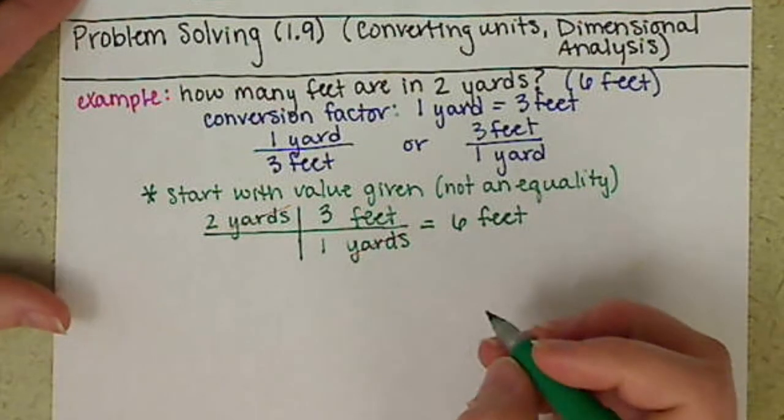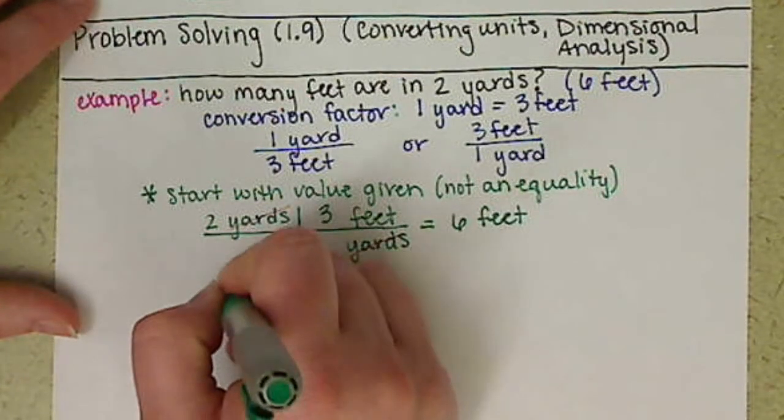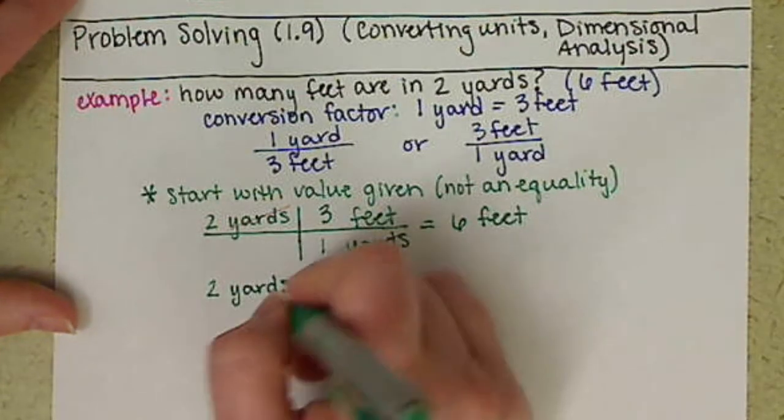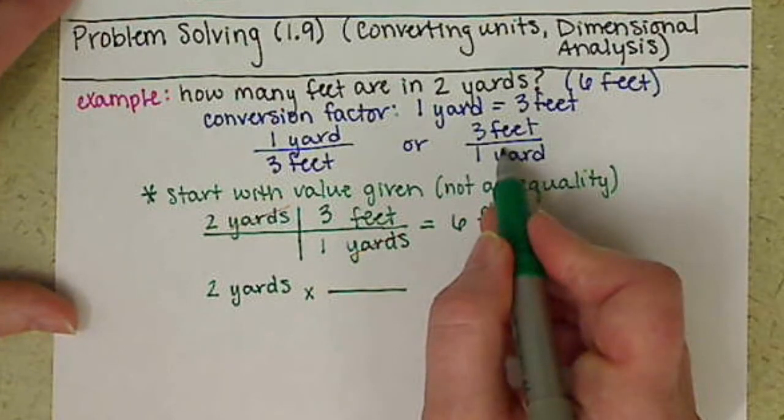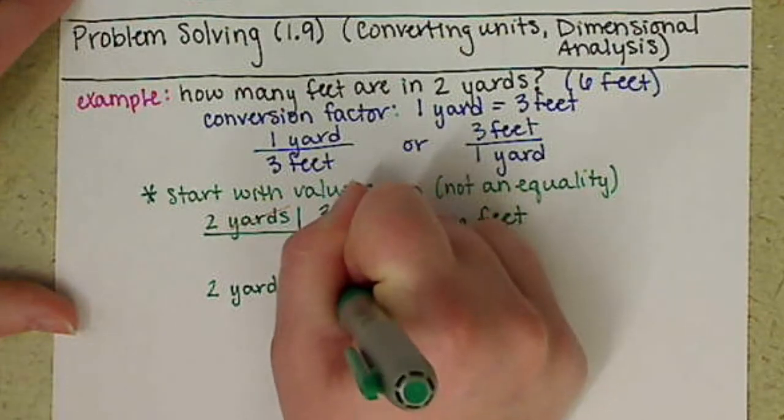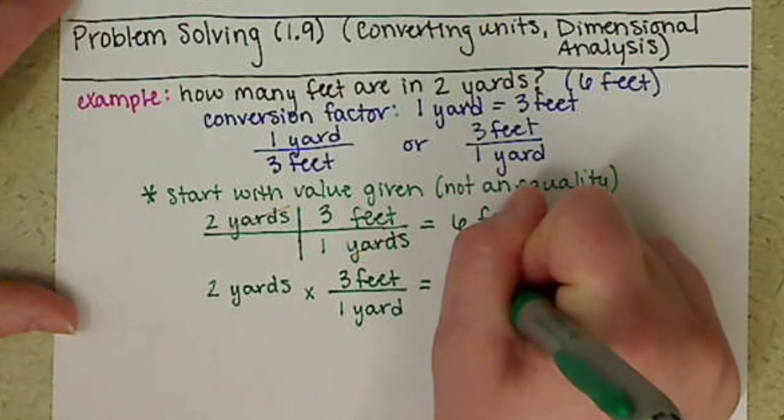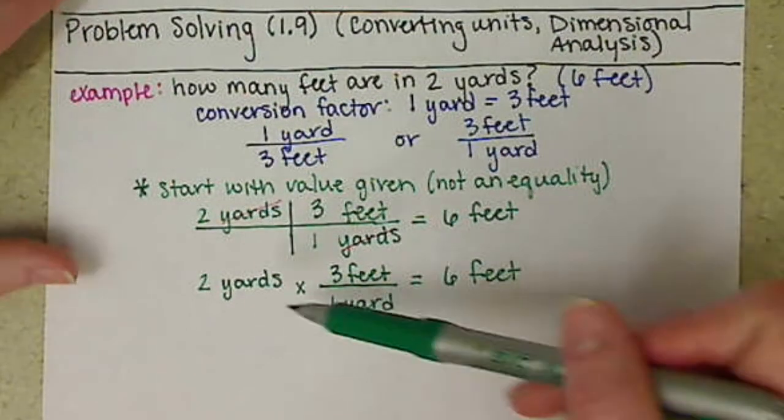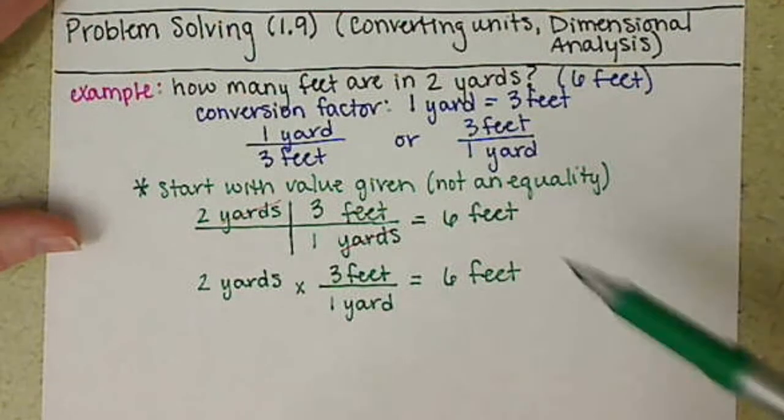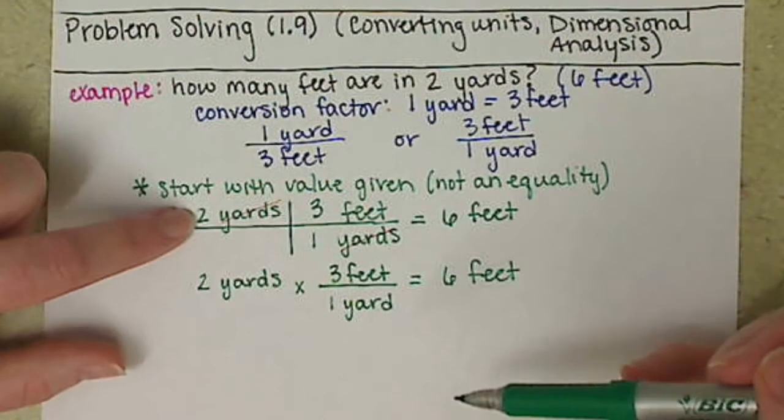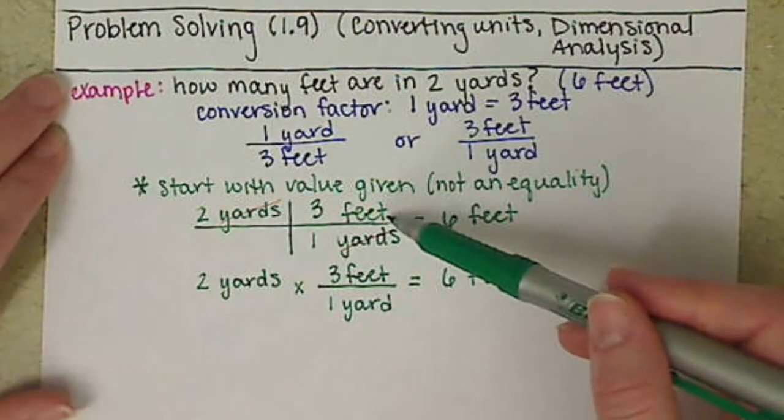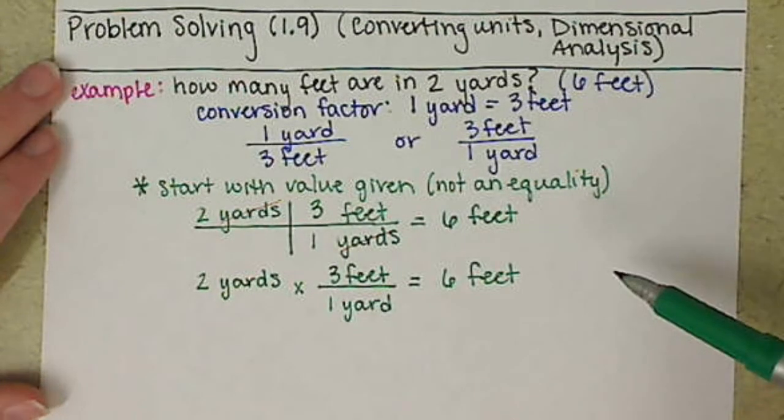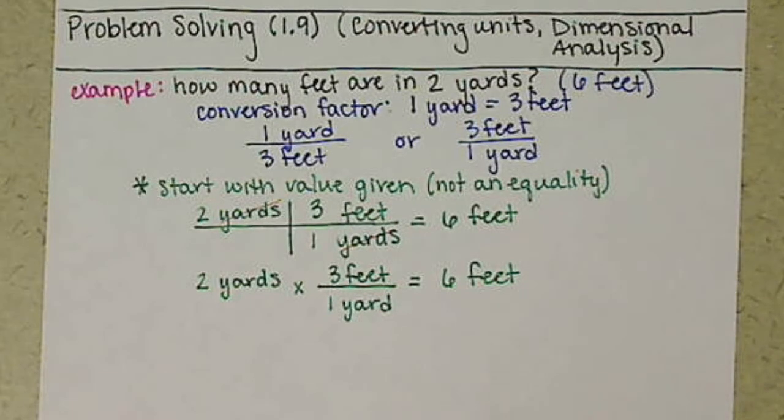To show you what this looks like in a typical math problem, some people like fractions better than this railroad system. We start with our two yards and multiply that by our conversion factor: one yard per three feet, and we get the same value, six feet. These are just two different visualizations of what's going on mathematically. They're all the same—we're still going to multiply across and divide down. Use whatever works for you or whatever you've been taught. I really like this railroad system; it's easy to see what's on the top and bottom. Throughout the quarter I'm going to be using this railroad system.